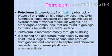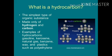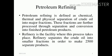Petroleum is recovered mostly through oil drilling. It is refined and separated most easily by boiling into a large number of consumer products. The hydrocarbons that make up petroleum are the simplest type of organic substances, made up of only hydrogen and carbon atoms, like kerosene and other natural gases.